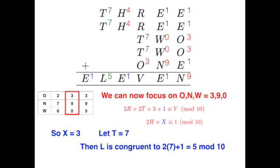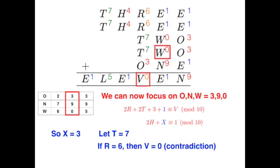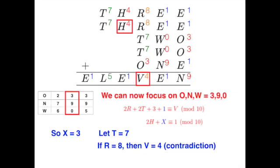If T is 7, then L is 5, being the unit digit of 2 times 7 plus 1. X being 3 means 2R plus 2T plus 3 plus 1 must be greater than or equal to 30, for a carryover of 3 from the hundredth digit column to happen. By simplifying this inequality, we see that R must be greater than or equal to 6. If R equals 6, then filling the cryptogram, we get a contradiction, as V would then be 0, which is already represented by W. If R is 8, then V is 4, but 4 is already represented by H, creating another contradiction here. So T couldn't be 7, and so it must be 8.